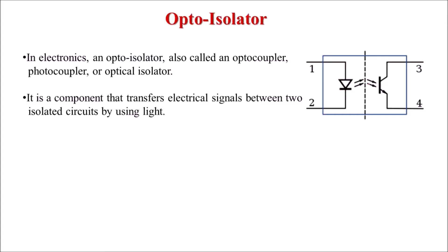This isolation avoids damage to the low power circuit. In power electronics applications, we need to isolate a triggering circuit from the power circuit, because the power circuit needs high voltage while the triggering circuit works on very low voltage. To avoid damage to the triggering circuit, we can isolate the triggering and power circuits using an optoisolator.